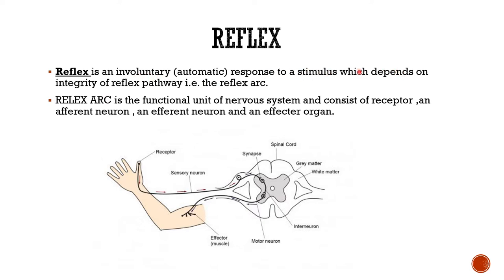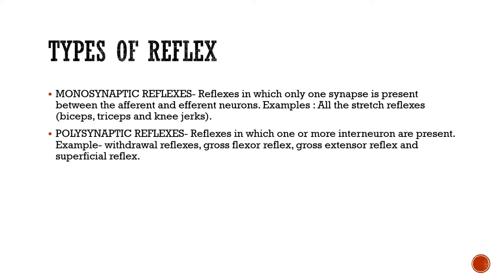Reflex is an involuntary or automatic response to a stimulus, which depends on the integrity of the reflex pathway, that is the reflex arc. The reflex arc is the functional unit of the nervous system and consists of a receptor, an afferent (sensory) neuron, which may have a single synapse or many synapses in between, an efferent neuron, and an effector organ such as muscle.